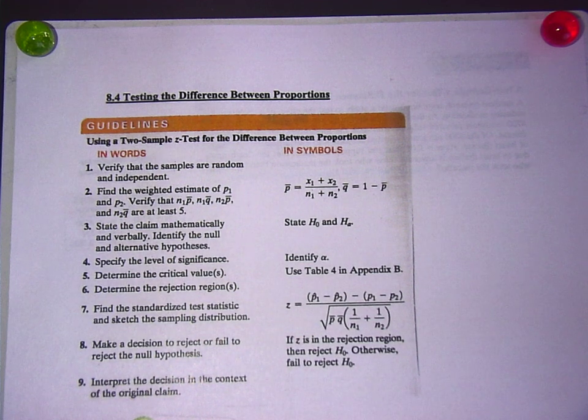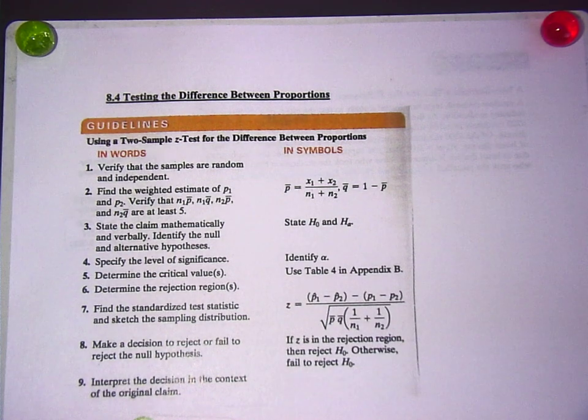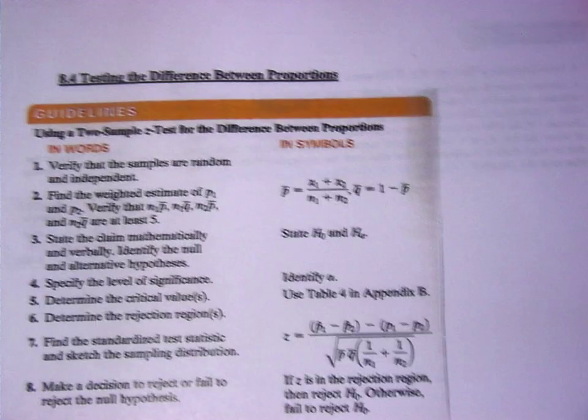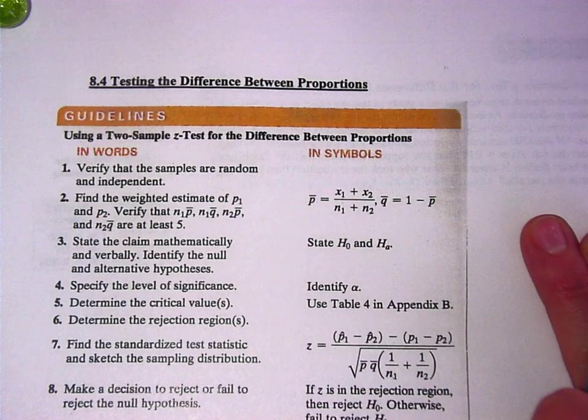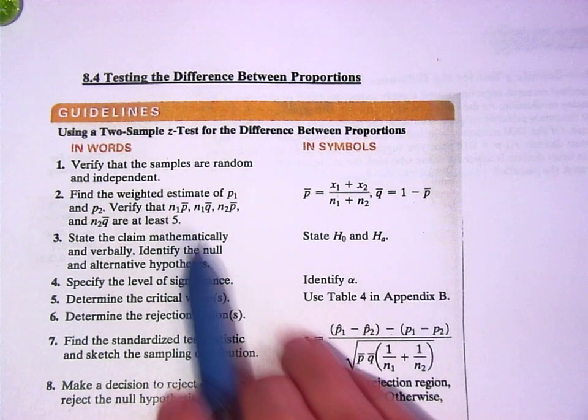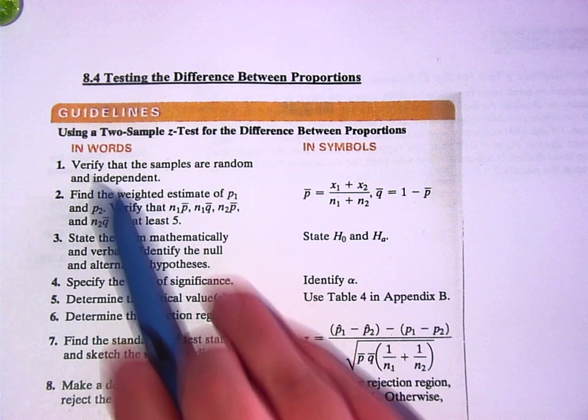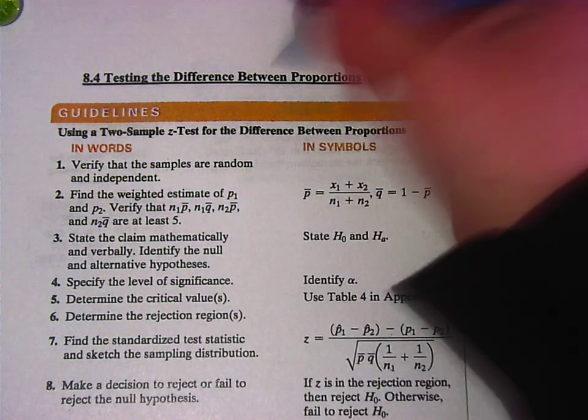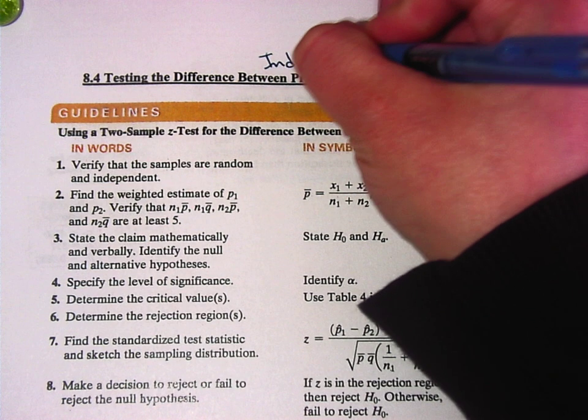Okay, so feel good to be almost done with this stuff? Only got four lessons after this. All right. So, verify that the samples are random and independent. This is an independent test, not dependent. This isn't paired or anything like that.